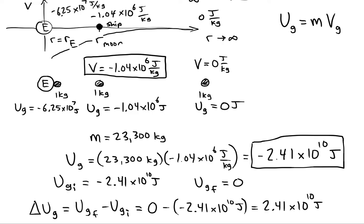This positive ΔUg represents the energy you would have to put into the spaceship in order for it to escape Earth's gravitational field. The ship has 2.41×10¹⁰ joules less energy at the Moon's location than it does at infinity, so that energy must be added back somehow — whether by physically pushing or, more realistically, by rocket propulsion. It will take 2.41×10¹⁰ joules to get the spaceship out to infinity.